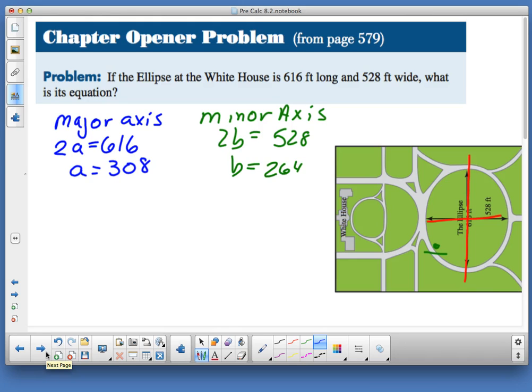So you're given those pieces of information. Your semi-major is A. Your semi-minor is B. So when you cut those in half, you've got 308 and you have 264. So we have found A and B. Now, all we are asked to do is find its equation. So if we use 0, 0 as our simplistic center of our ellipse, we now know that A would have to go with X. That's 308 squared. B would have to go with Y. That's 264 squared. And we have a 1. And that is our equation in standard form of the ellipse located on the White House lawn.